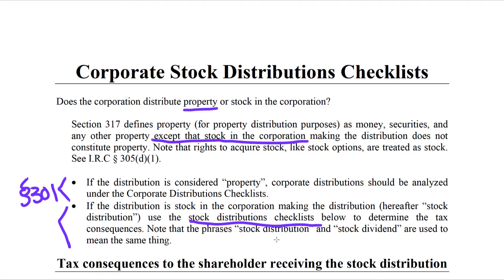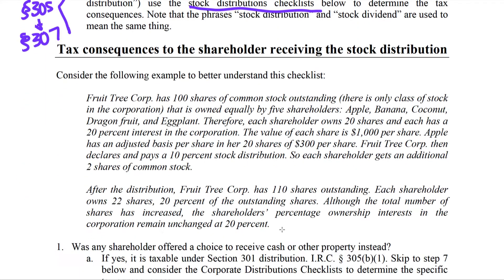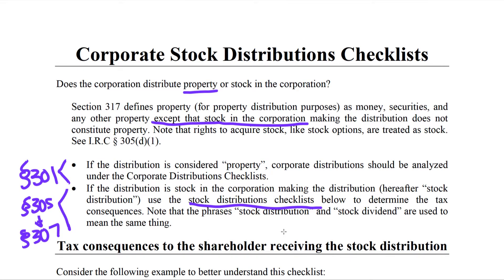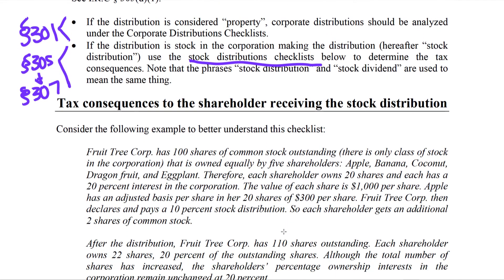We're going to have two checklists: one that focuses on the shareholder and one that focuses on the corporation. This is going to be the Section 305 and 307 checklist. We're starting with the assumption that we have a corporate stock distribution. If we had a property distribution, we would use the corporate distribution checklist with the four-step process — but here we have a stock distribution.